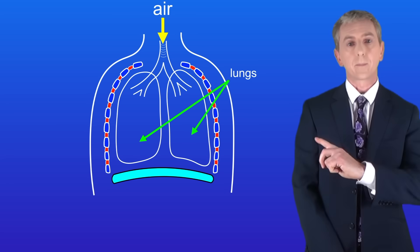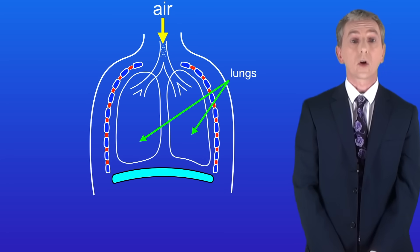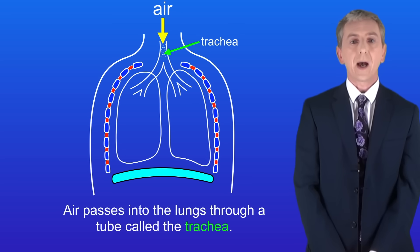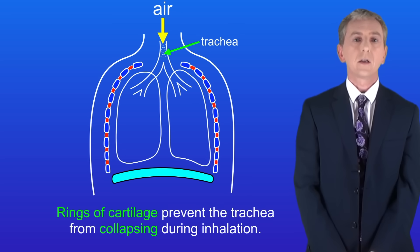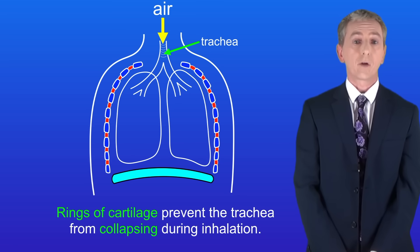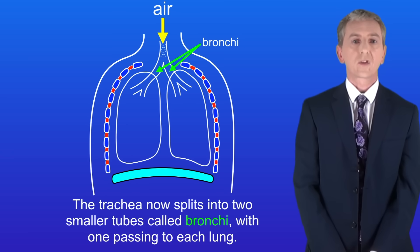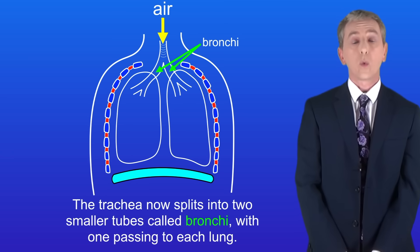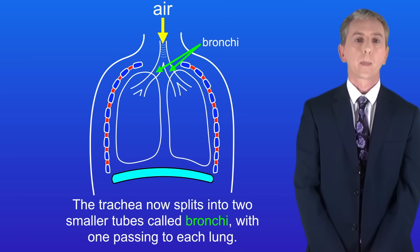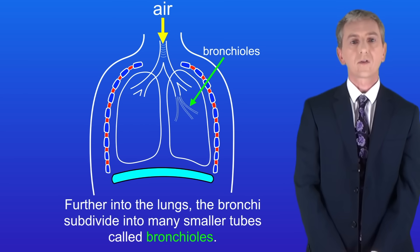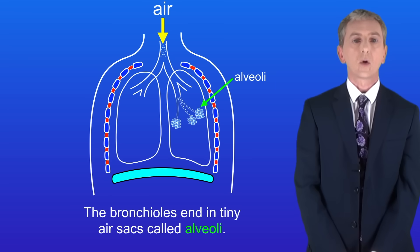Here is a picture of the lungs. As you can see, humans have got two lungs. Air passes into the lungs through a tube called the trachea. One key feature of the trachea is that it contains rings of cartilage, which prevent the trachea from collapsing when we inhale. The trachea splits into two smaller tubes called bronchi, with one passing to each lung. Further into the lungs the bronchi subdivide into many smaller tubes called bronchioles, and finally the bronchioles end in tiny air sacs called alveoli.